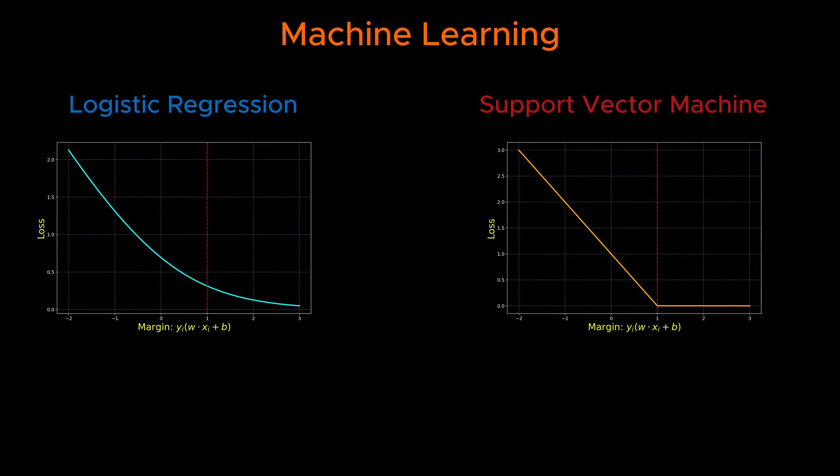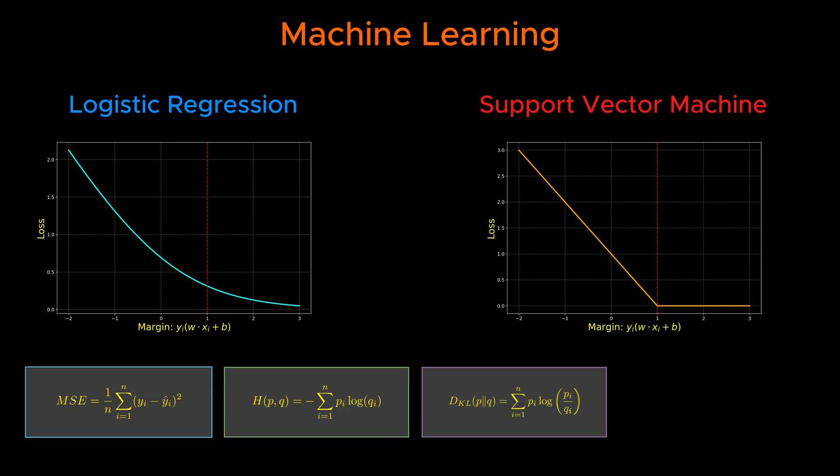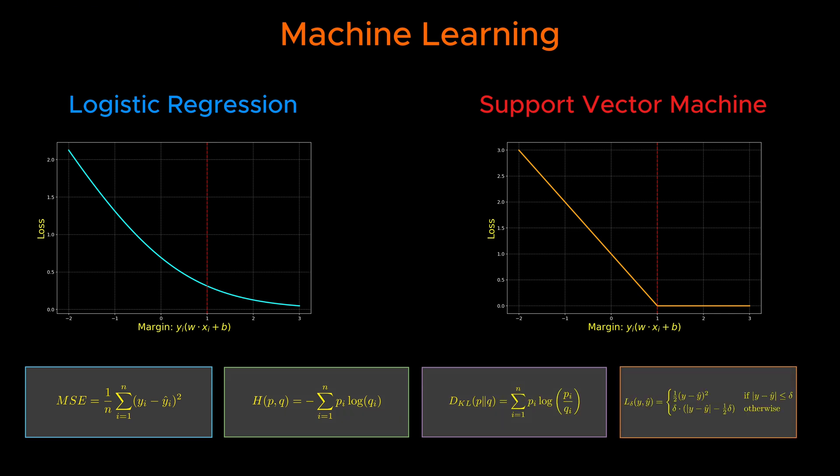Now contrast that with machine learning. We've already seen that the loss function for logistic regression is different from that of the SVM. And these are just two examples among dozens. Mean squared error, cross entropy, Kolbach-Leibler divergence, Huber loss, the list goes on.